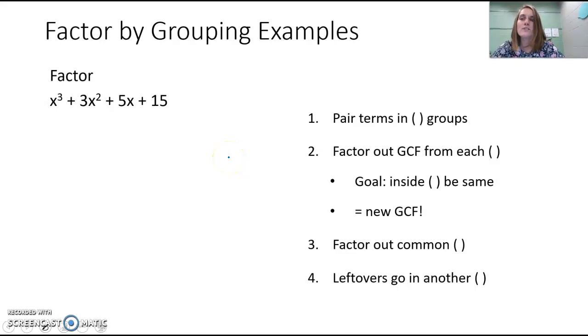We want to factor x³ + 3x² + 5x + 15, and we're going to do this by grouping because there's four terms. That's the only way that we know how to factor if we have more than three terms.